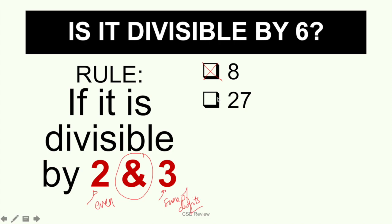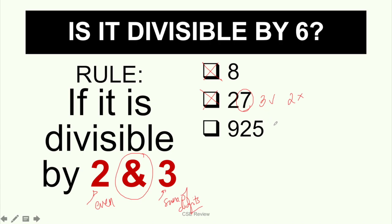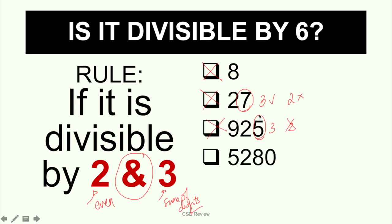The second number, 27: it has to be divisible by both 2 and 3. It might work for 3, but for 2 it doesn't because it's not even — it's an odd number, so it's not divisible by 6 either. Next, 925: it needs to be divisible by 3 and 2, but it's not divisible by 2 because the last digit is 5, so it can't be divisible by 6 right away. For 5280: it's divisible by 2 since it's even, so we check for 3 by adding the digits — 5 plus 2 is 7, plus 8 is 15. Since 15 is divisible by 3, and it's also divisible by 2, then 5280 is divisible by 6.